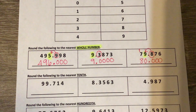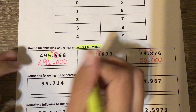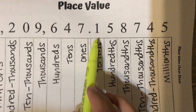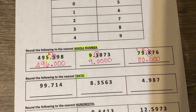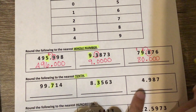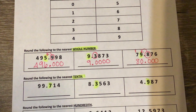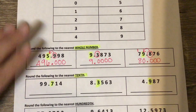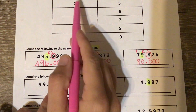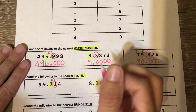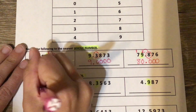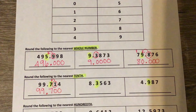Next, we are rounding to the nearest tenth. If I look at my place value chart, the tenths place is just to the right of the decimal. So I'm going to highlight that number in all of these: the seven, the three, and the nine are each just to the right of the decimal. For this first one, I circle the number to the right — in the hundredths place, one tells me to stay the same. So the seven stays seven. Everything to the left stays the same, bringing down the decimal and the 99, and everything to the right becomes zero.